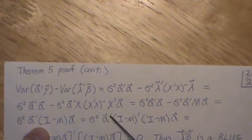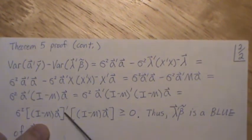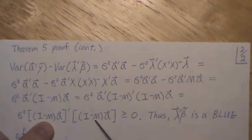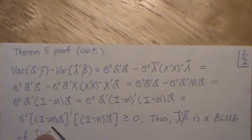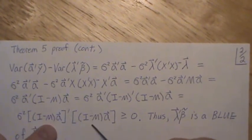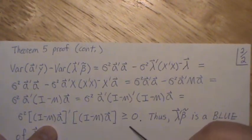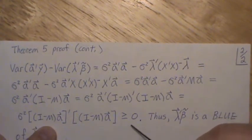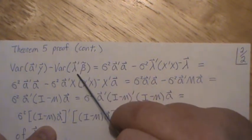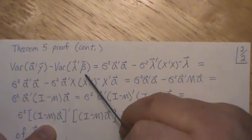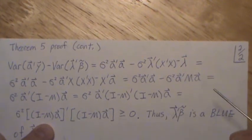We can unfold that transpose into this, then this piece comes down, sigma squared comes down. Notice this is the same vector in both cases. When you take that vector product, it ends up being the sum of squared things, which has to be non-negative, greater than or equal to zero, which proves that lambda prime beta tilde is a BLUE. It's at least the best in terms of smallest variance among linear unbiased estimators.